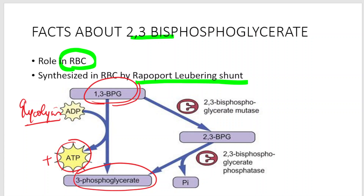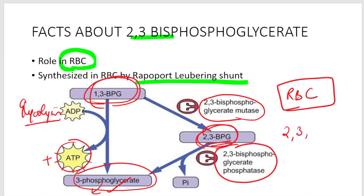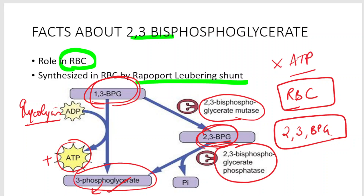In RBCs, 1,3-bisphosphoglycerate is converted to 2,3-bisphosphoglycerate by the enzyme 2,3-bisphosphoglycerate mutase. The same enzyme also has phosphatase activity — 2,3-bisphosphoglycerate phosphatase — which degrades 2,3-bisphosphoglycerate back to 3-phosphoglycerate so glycolysis can continue. Importantly, in this shunt mechanism there is no ATP synthesized.